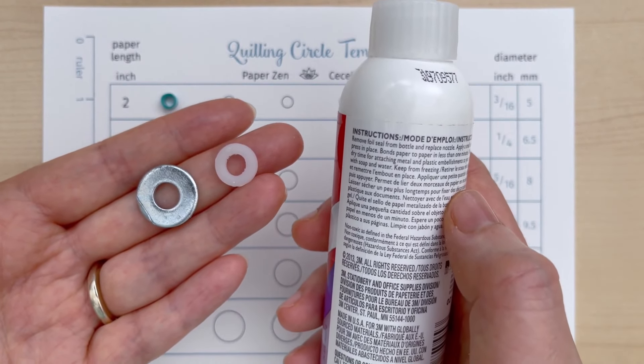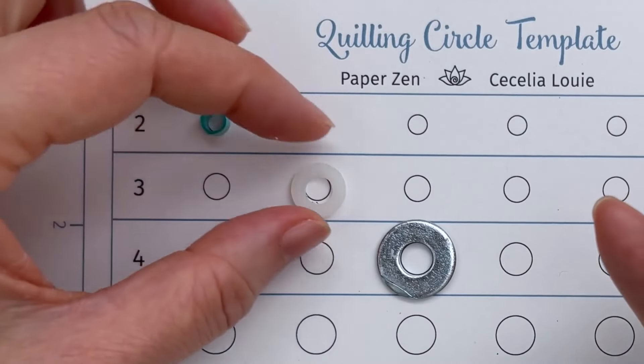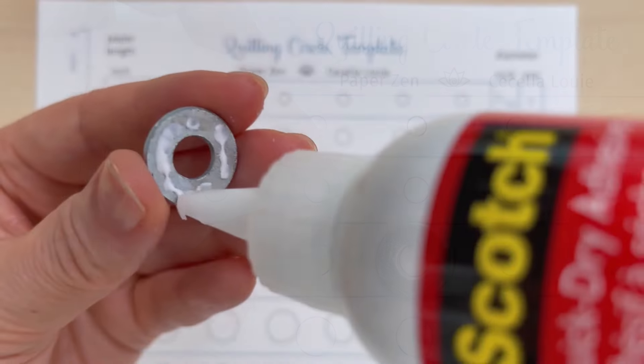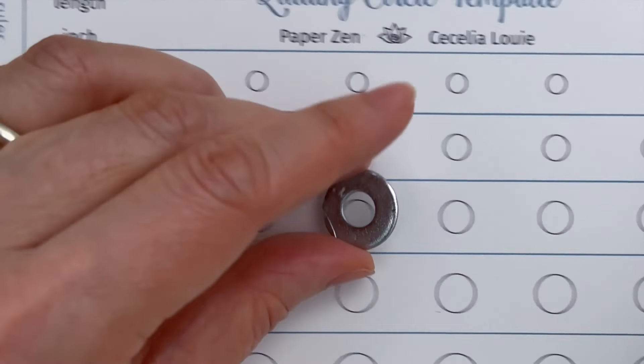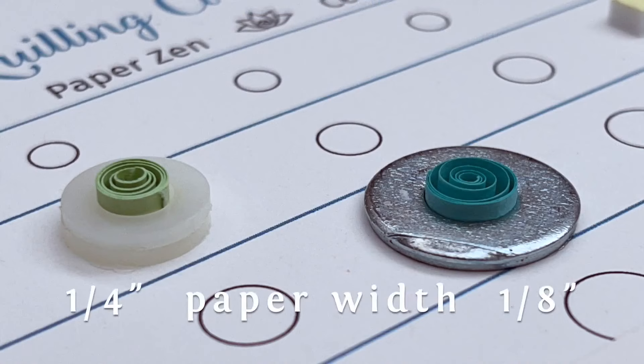So I'm just going to dab a little bit of glue here and there, because I don't want the excess to squeeze out when I glue it down to the template. The washers I'm using seem to be a good depth if you're using 1/8 inch paper. And if you need more depth, I even tried gluing two nylon washers together and it seemed to hold.